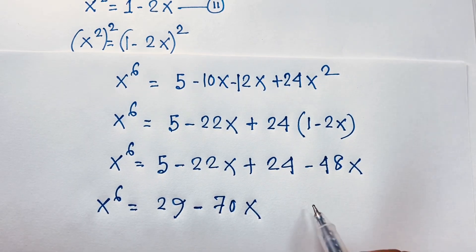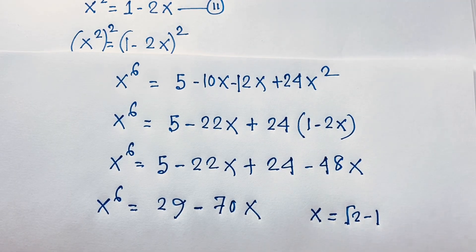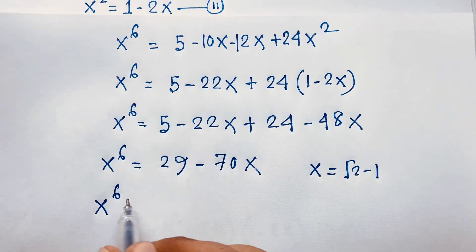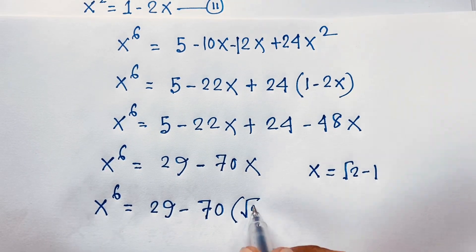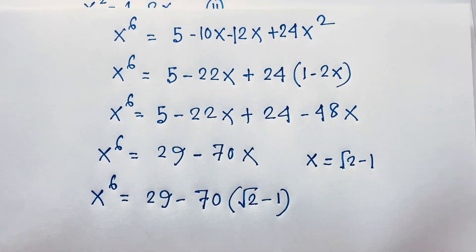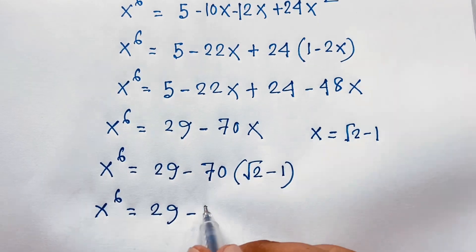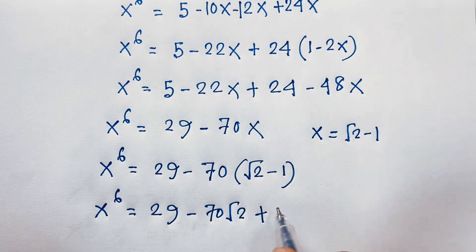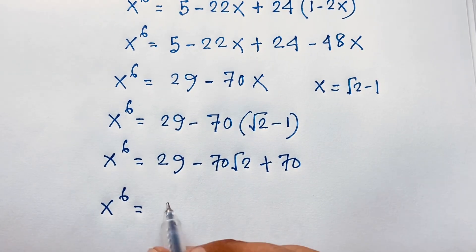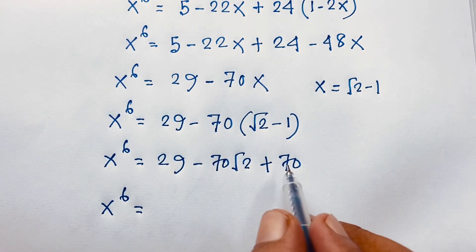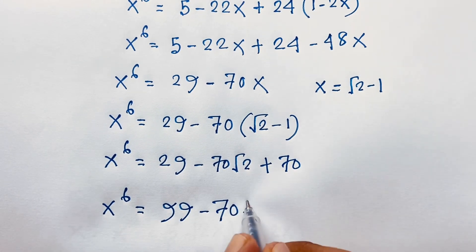Recalling that we let x equal √2 minus 1, I substitute this value: x^6 equals 29 minus 70 times (√2 minus 1), which gives 29 minus 70√2 plus 70. Therefore x^6 equals 99 minus 70√2.